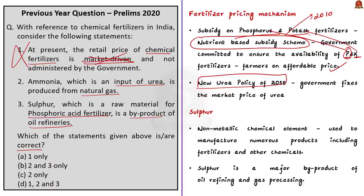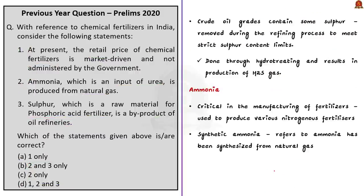Eliminating Statement 1, the options narrow to B or C, confirming Statement 2 is correct. Regarding Statement 3: sulfur is a non-metallic chemical element and an integral component of the world economy, used to manufacture fertilizers and other chemicals. Sulfur is a major by-product of oil refining and gas processing. Most crude oil grades contain sulfur which must be removed during refining through hydro-treating, producing hydrogen sulfide gas that is converted into elemental sulfur in the sulfur recovery unit. Hence Statement 3 is correct.